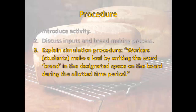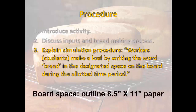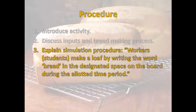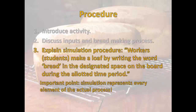Next, explain the simulation procedure. Workers — who will be students — will simulate making a loaf by simply writing the word 'bread' in the designated space on the board during the allotted time period. The act of writing represents the actual process of mixing ingredients, kneading dough, putting loaves into the oven, and baking. The designated space on the board represents the factory space itself — the capital, with all the countertops, sinks, bowls, and ovens. The allotted time period of one minute represents the passage of a complete working day. In this manner, the simulation includes all of the input categories, and it is comprehensive though extremely simplified.